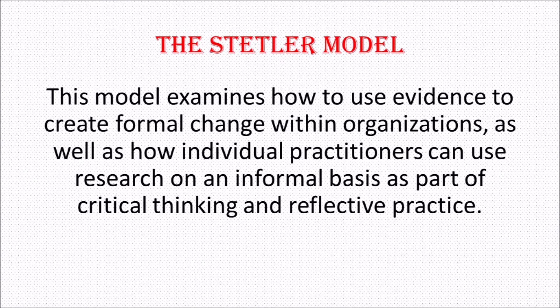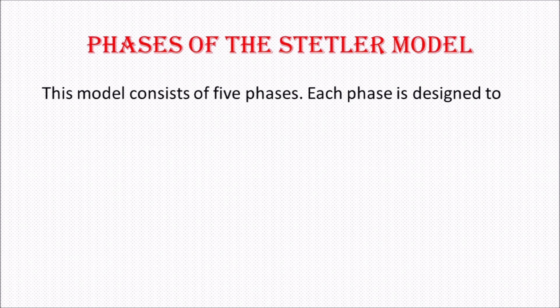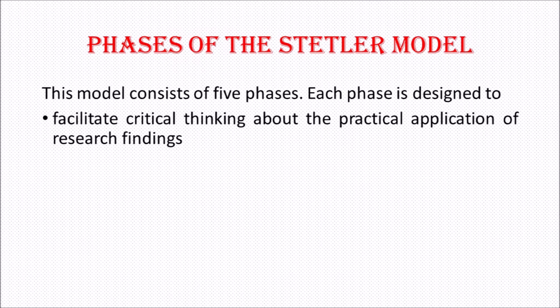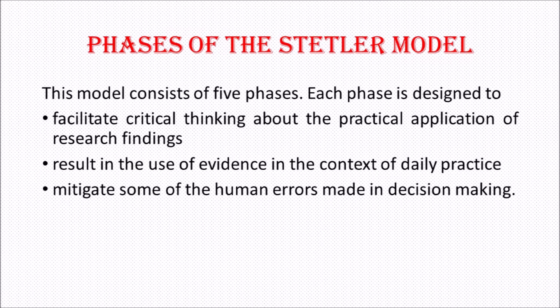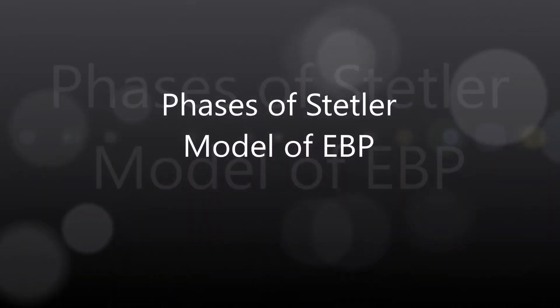The Statler Model of EBP consists of five phases. Each phase is designed to facilitate critical thinking about the practical application of research findings, result in the use of evidence in the context of daily practice, and mitigate some of the human errors made in decision making. The five phases are: preparation, validation, comparative evaluation and decision making, translation or application, and evaluation.